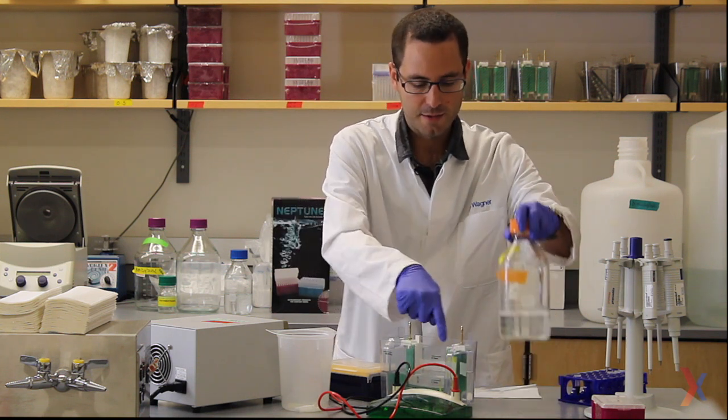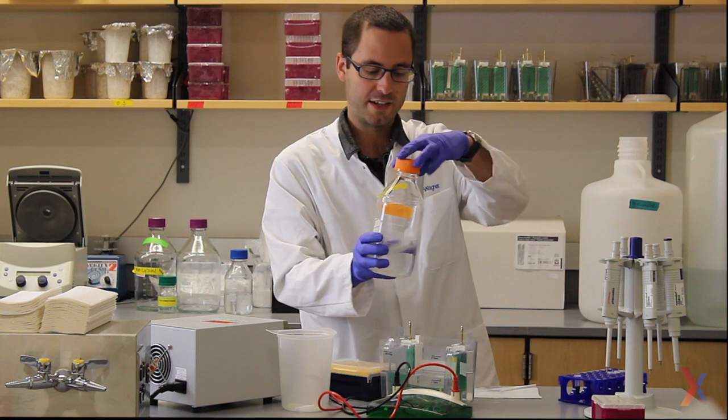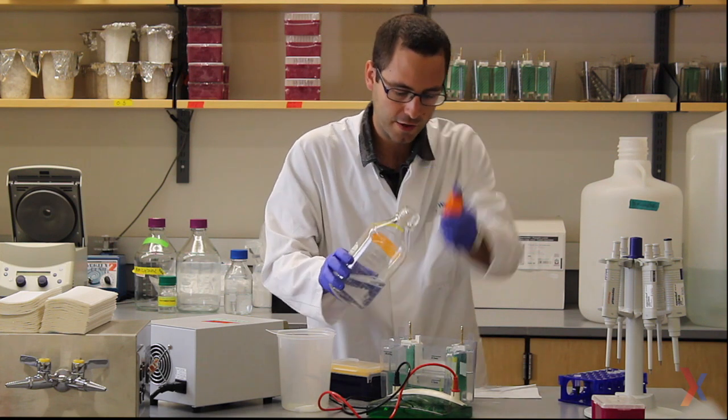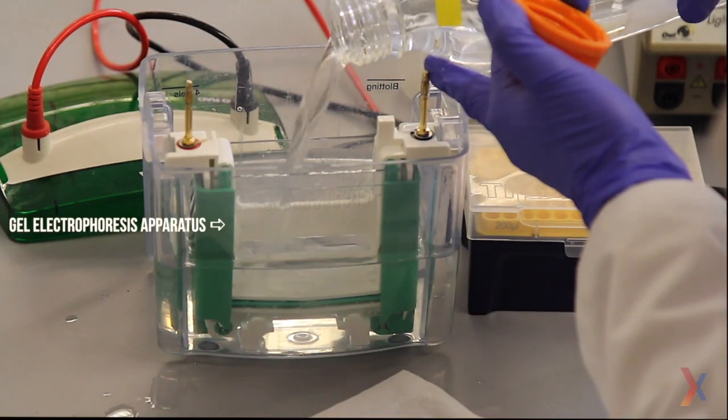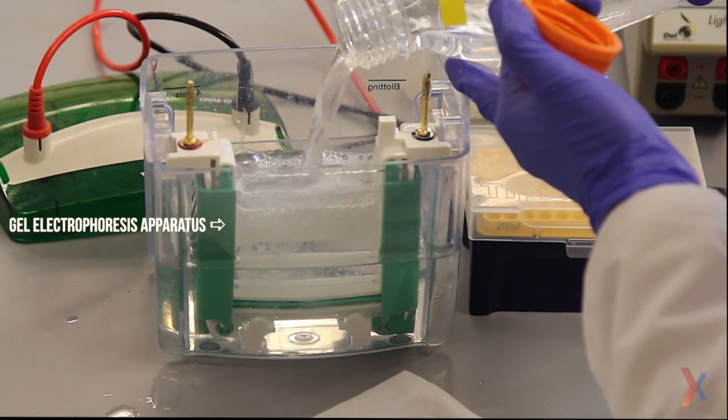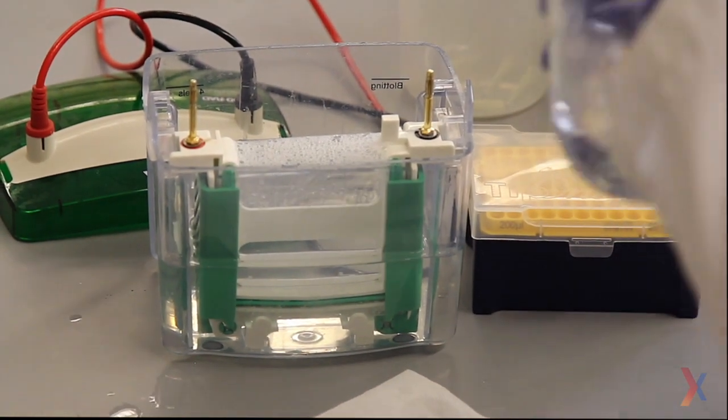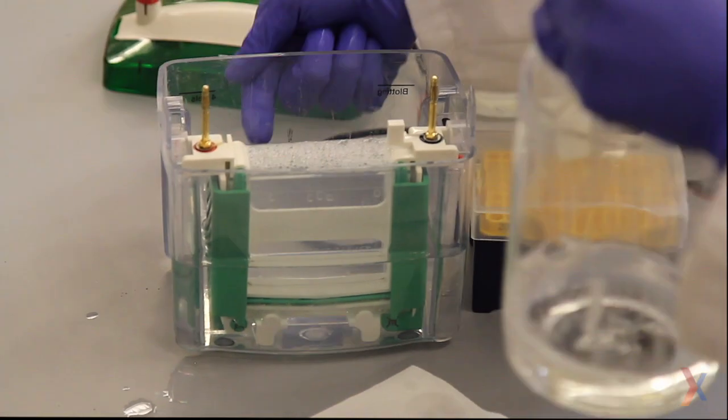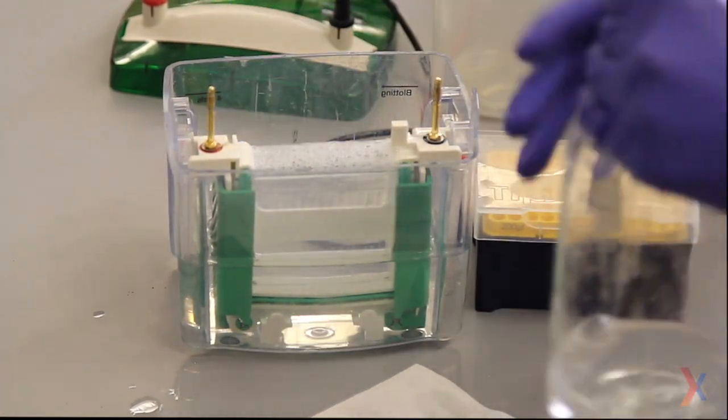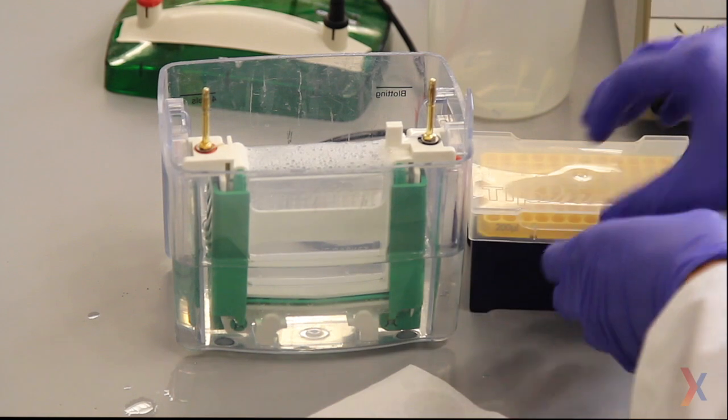The middle needs to be filled up with 1X SDS running buffer. This is now filled. There's a line on the outside here that indicates two gels. We're also above that line, so now we're good to go to load the gel.